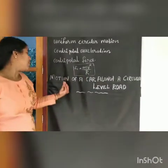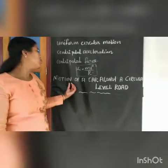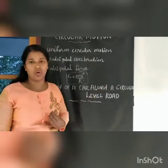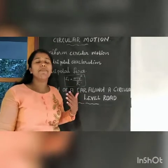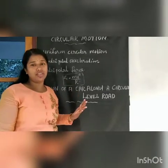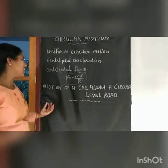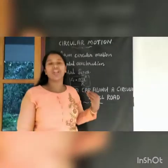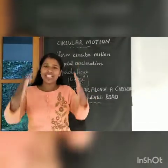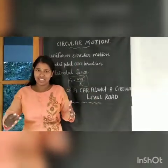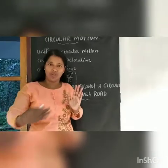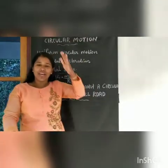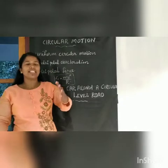In our syllabus two topics are given. First one is motion of a car along a circular level road. Second one is a banked road. Two cases are there. In the first case, a car moves along a circular road, and we consider two directions: vertical and horizontal.